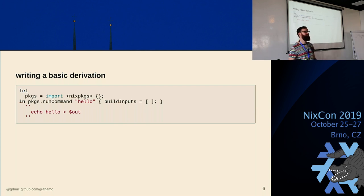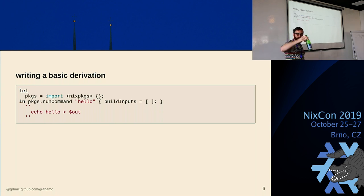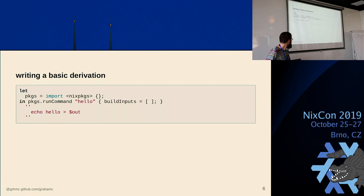Q: Why is nixpkgs referenced with angle brackets? We'll cover that later. For now, assume that nixpkgs is just a magic path. If you do a Git checkout of nixpkgs, you could replace this with the path to your checkout. It's an environment variable named NIX_PATH.